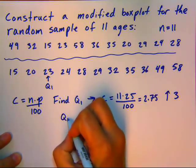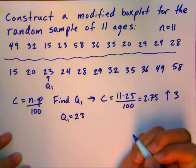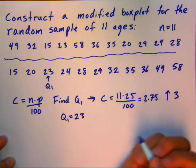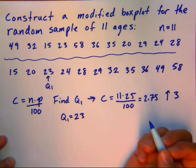So Q1 equals 23. Next we want to find our 50th percentile, Q2. And that's really going to be the same thing as also the median.